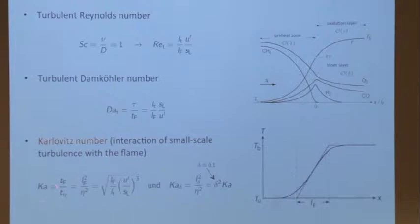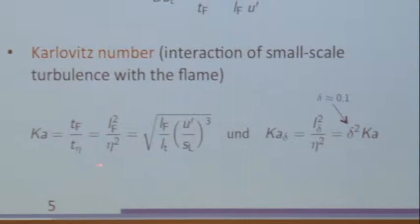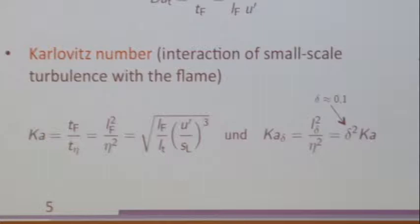The Karlovitz number is the most important non-dimensional group for premixed turbulent combustion. It compares the timescale of the flame — the chemical timescale — with the smallest timescale in turbulence, which is the Kolmogorov timescale. You can write it like this, and express it in terms of these relations from the previous slide.